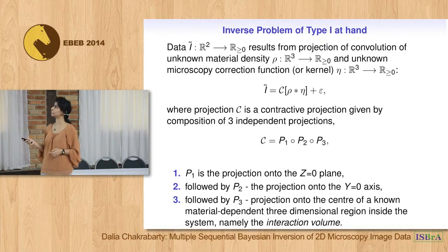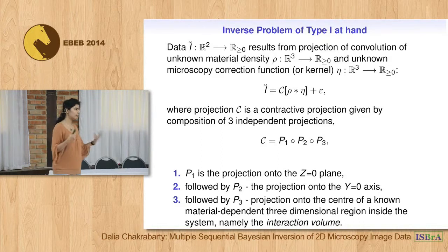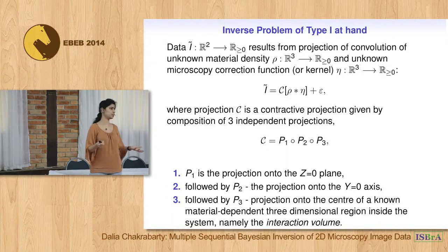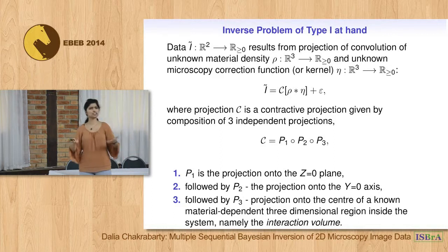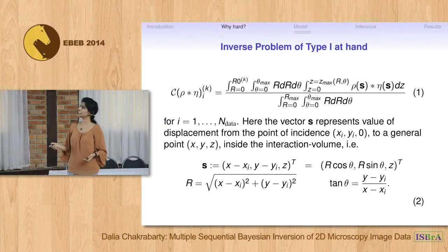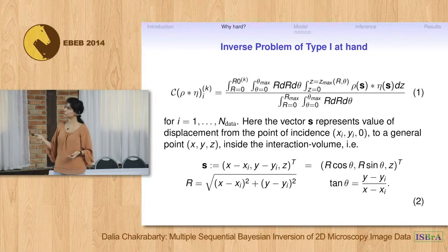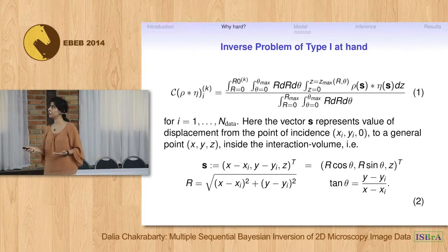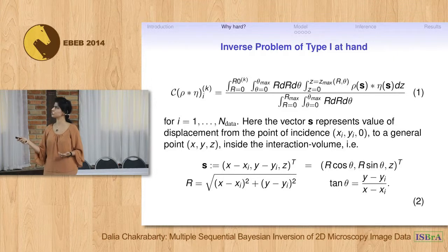The radiation is modulated in quality and intensity by different physical processes. Mathematically, this modulation is a convolution between the material density ρ(x, y, z) — proportional to radiation per unit volume — and a kernel η(x, y, z) that embodies the different physical processes modulating the radiation. The image datum is the averaging of this convolution over the interaction volume.